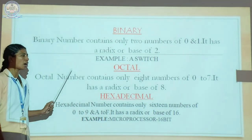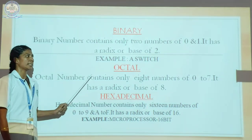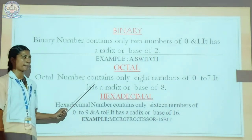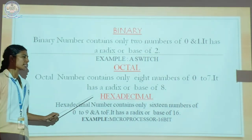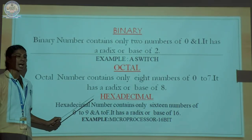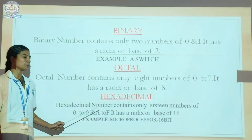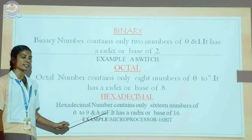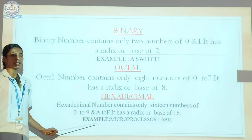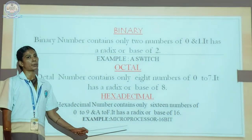Next one is octal. The octal number system contains only eight numbers, that means zero to seven. It has a radix or base of eight. Next one is hexadecimal. The hexadecimal number system contains 16 numbers — zero to nine and A to F. It has a radix or base of 16. Here the example: hexadecimal numbers are used for 16-bit microprocessors.